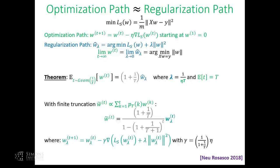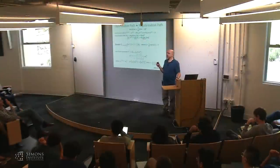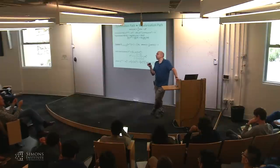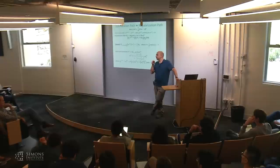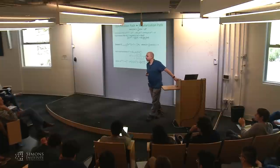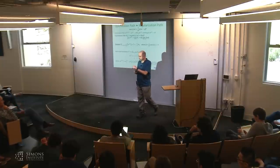You can get generalization guarantees, but relating the iterate to the regularized solution is the challenge. In nonparametric situations with a rich enough class, you can sometimes do it. But a clean relationship to the regularization path in non-separable cases remains open.